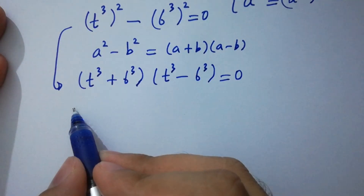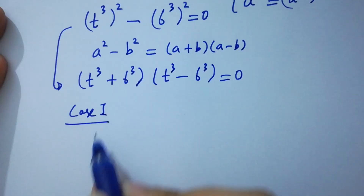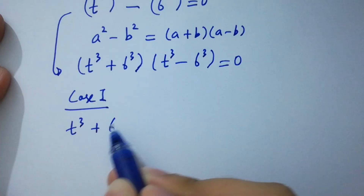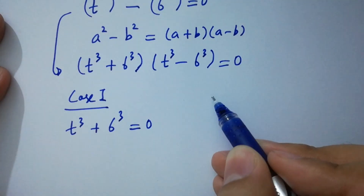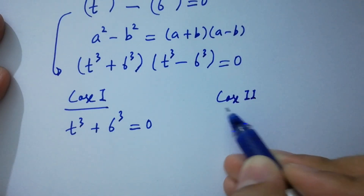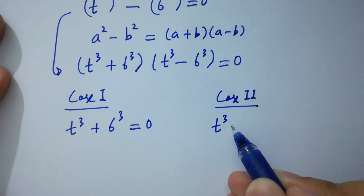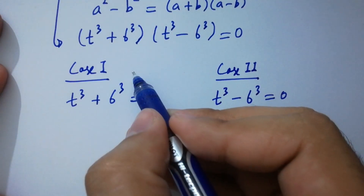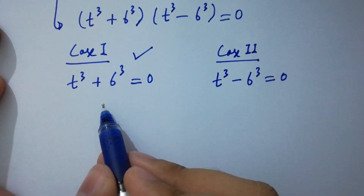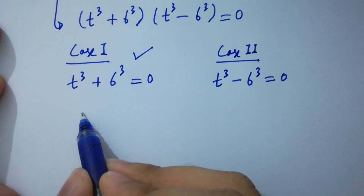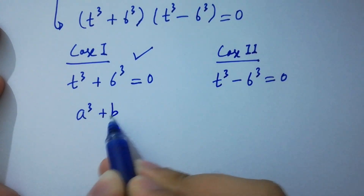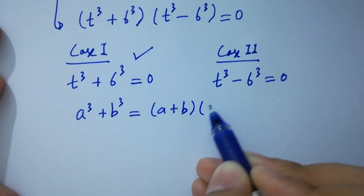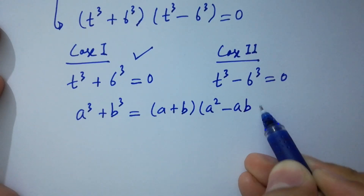We have two cases. Case 1: t^3 + 6^3 = 0. Case 2: t^3 - 6^3 = 0. For Case 1, we apply the sum of cubes formula: a^3 + b^3 = (a+b)(a² - ab + b²).